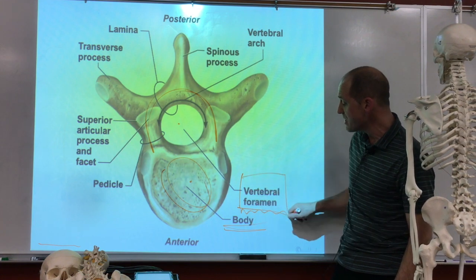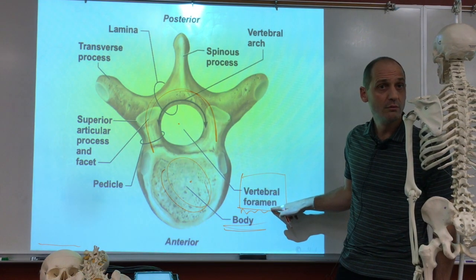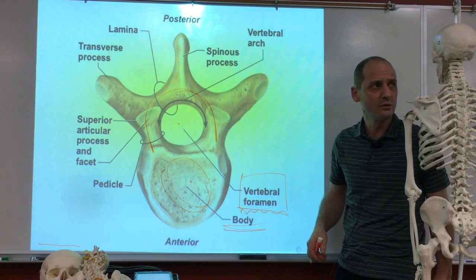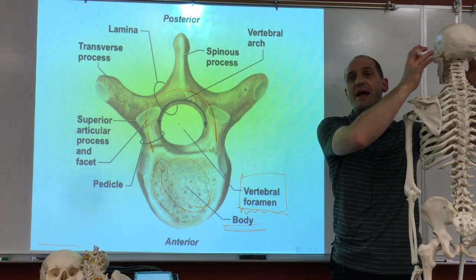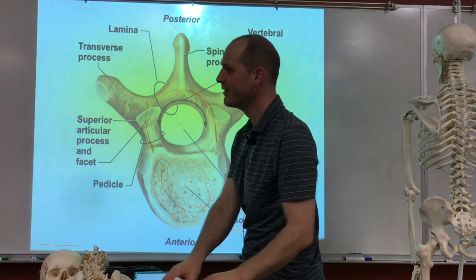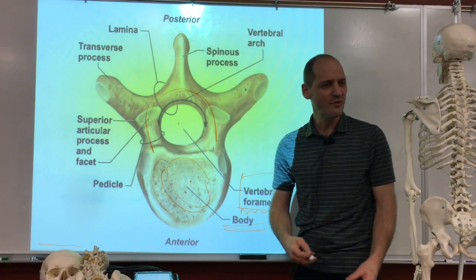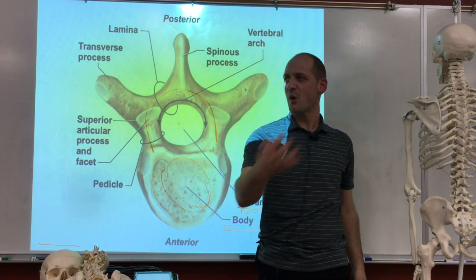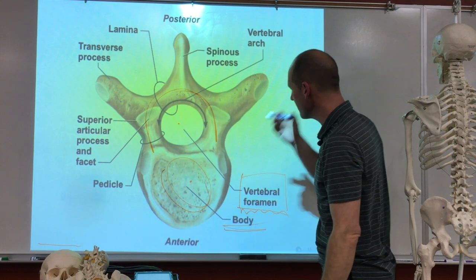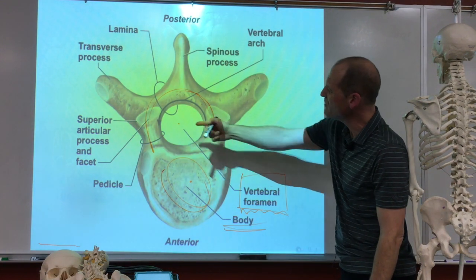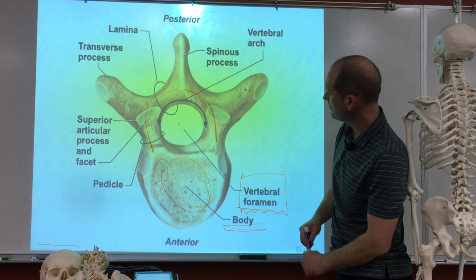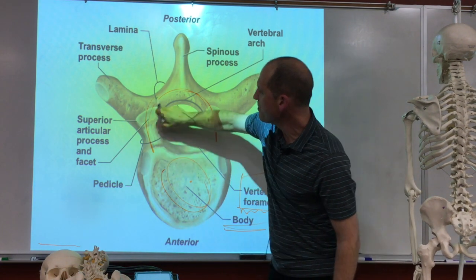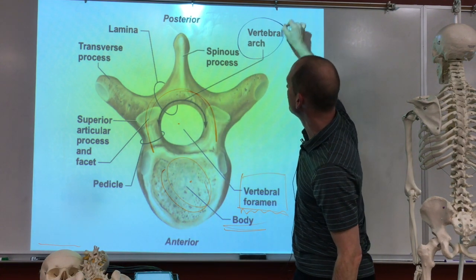When you see the word foramen, you think hole. Nerve type stuff and artery things go through holes. You're going to learn a lot of foramina if you take an upper-level class. The vertebral foramen is the hole in the middle of it, and then the bony part — we call the whole thing the vertebral arch. It's like an arch; you could walk through it if you look at it from this direction.